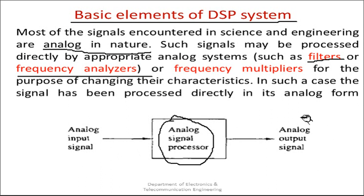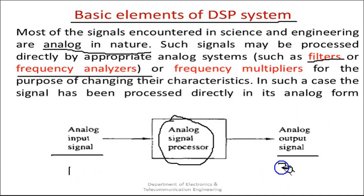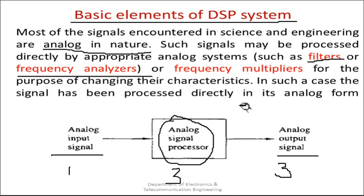That is what this particular block diagram represents — an analog input signal is converted into an analog output signal. For example, let's assume the input signal has a frequency of 1 megahertz and I want to convert it to 3 megahertz. I will use a frequency multiplier, multiplying by 3, to get the output at 3 megahertz. This is a simple task, but the need for digital signal processing comes when we actually need a digitized quantity or value.